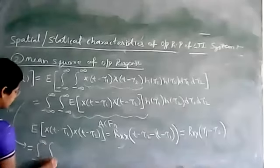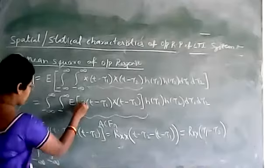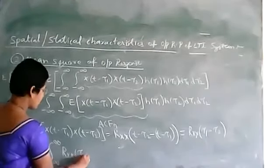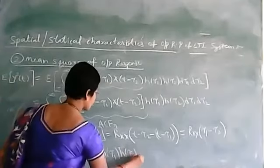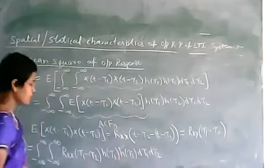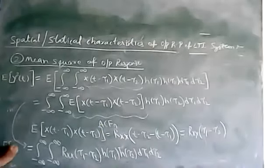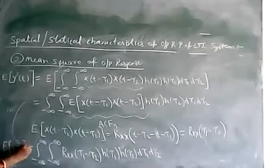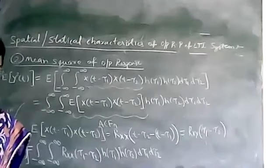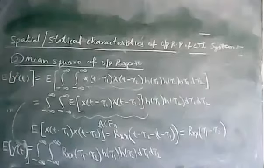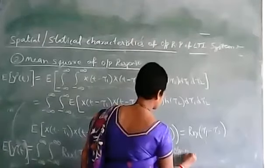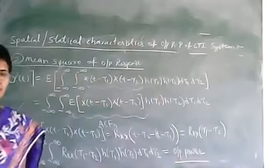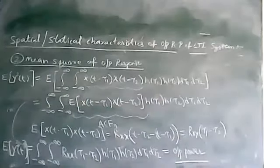So the expression becomes the double integral from minus infinity to plus infinity of Rxx(τ₁ − τ₂) · h(τ₁) · h(τ₂) dτ₁ dτ₂. This is the formula for the expected value of y²(t). From this we can observe that the mean square value E[y²(t)] is a function of τ only — it is not a function of t. This expression gives us the output power, since the mean square value represents the power.